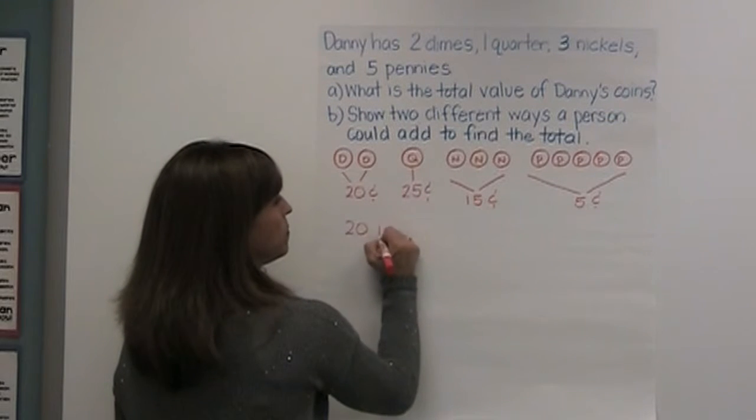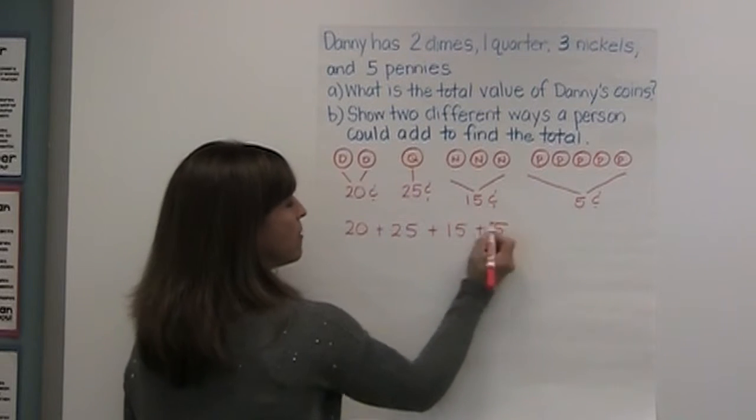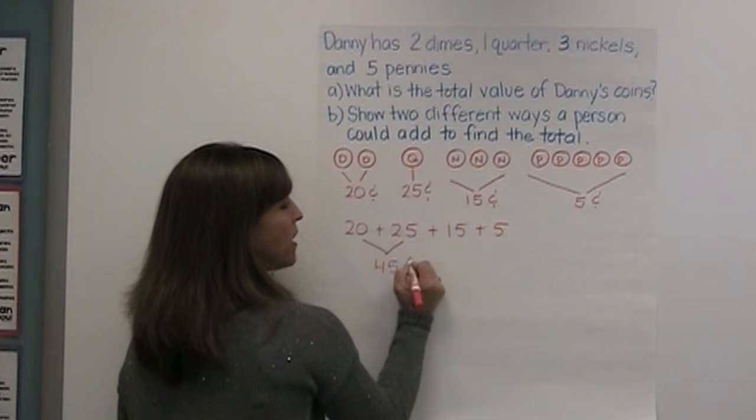I have twenty plus twenty-five plus fifteen plus five. I know twenty plus twenty-five is forty-five cents.